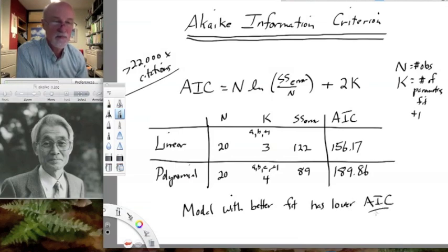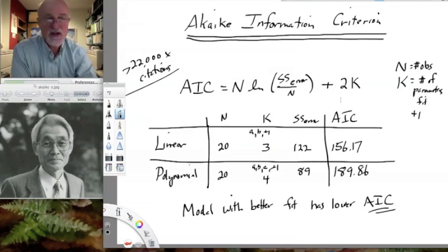Okay, so most statistics packages, including SAS JMP, can calculate this AIC value for you. In SAS JMP, it's kind of hidden in the fit model platform, so you won't find it, I don't believe, in fit y by x.